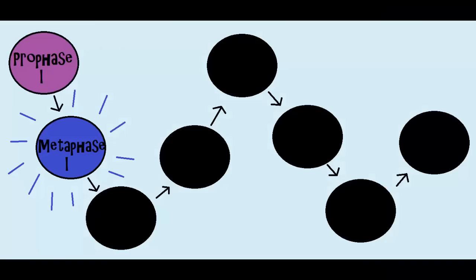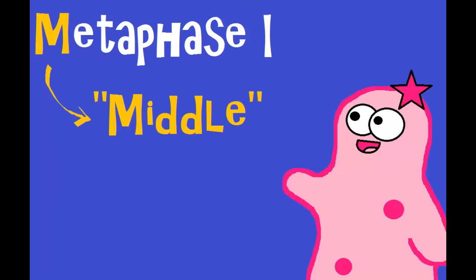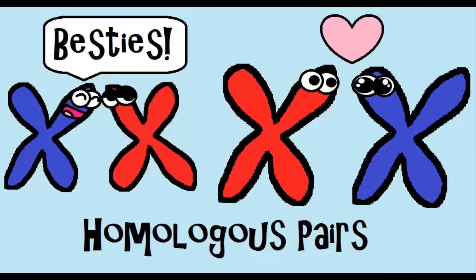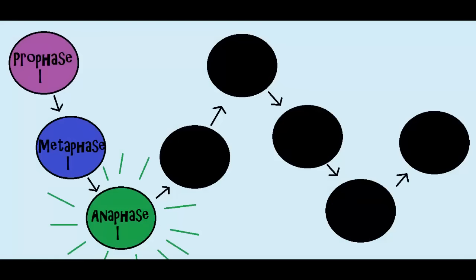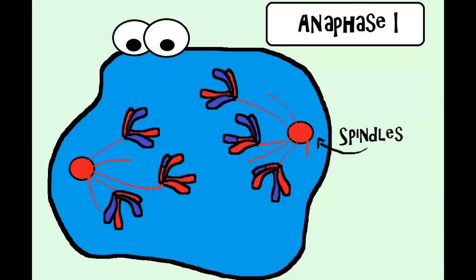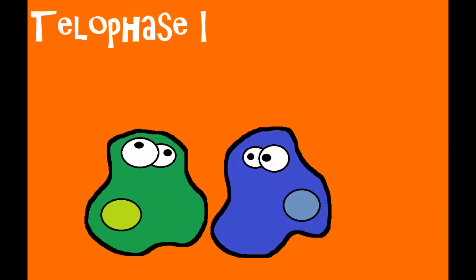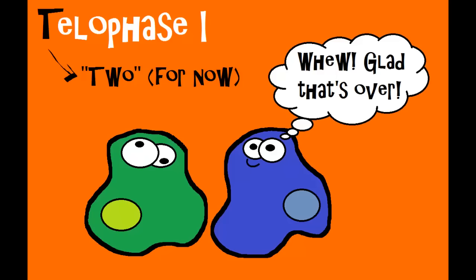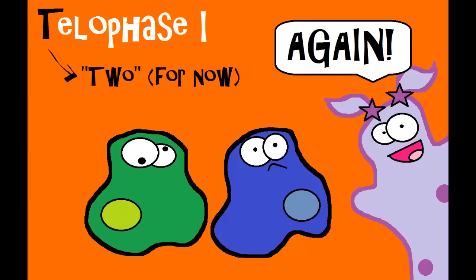Next is metaphase one — remember M for middle — where the chromosomes line up in the middle. Unlike mitosis, they're still in homologous pairs, so they're not in a single-file line. In anaphase one, think A for away or apart, because the chromosomes move apart. Then telophase one — think T for two — because you end up with two cells at the end of meiosis one. However, we're going to end up with more than that in meiosis two.